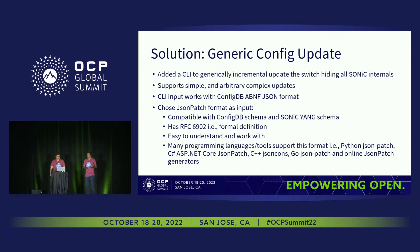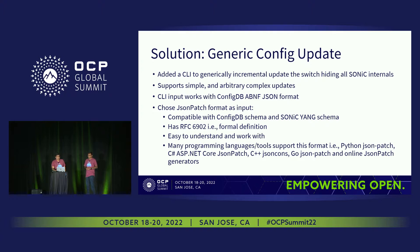A JSON patch is a set of instructions which has an op — like it could be remove, add, or create — and it can target a specific level of an object and what value you need to change. JSON patch is well known; it applies and works on config DB schema. It has an RFC, is formally defined, and many programming languages have tools for it. We use the Python approach, but there are a couple of other languages supporting it too.